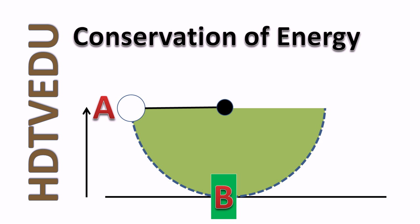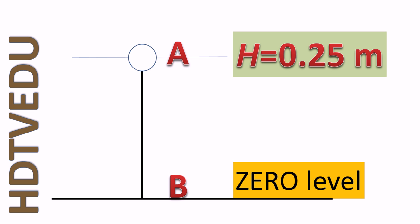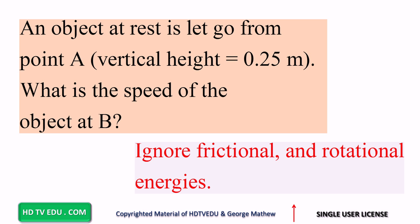We have a pendulum swinging back and forth. The object is let go from point A. Point B is at the lowest point. The vertical height from which the object was released was 0.25 meters. Point B is at the zero level. An object at rest is let go from point A. Vertical height is 0.25 meters. What is the speed of the object at B? Ignore frictional and rotational energies.